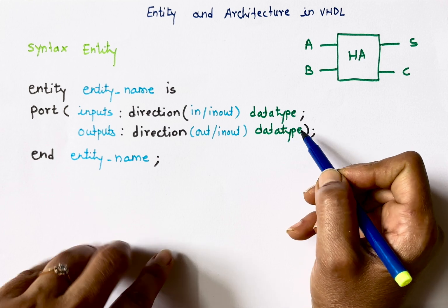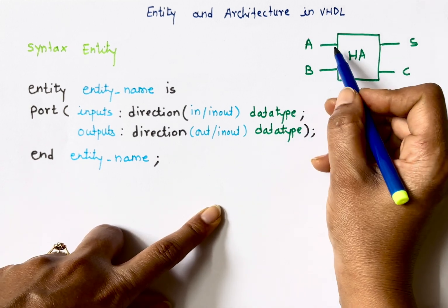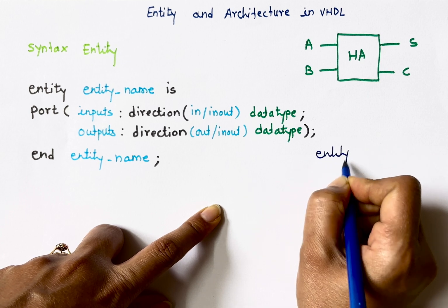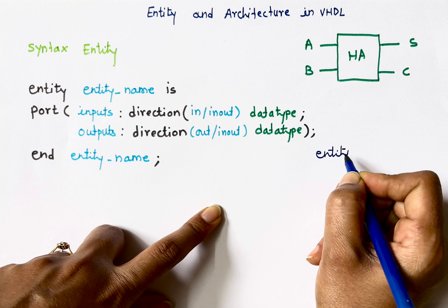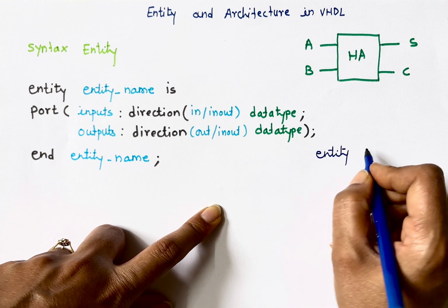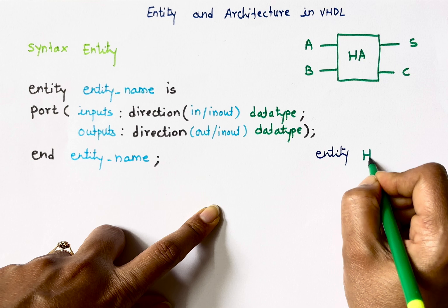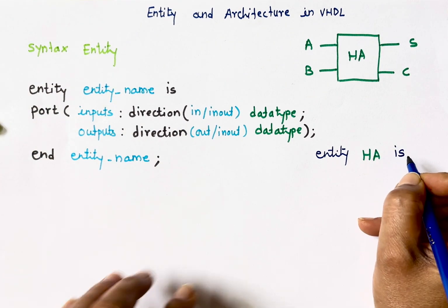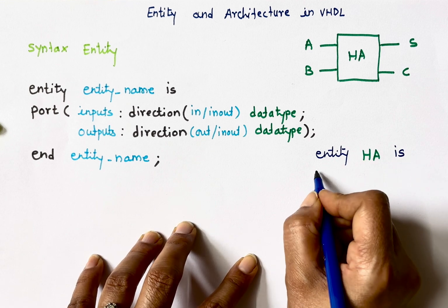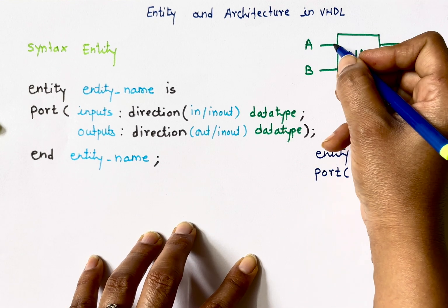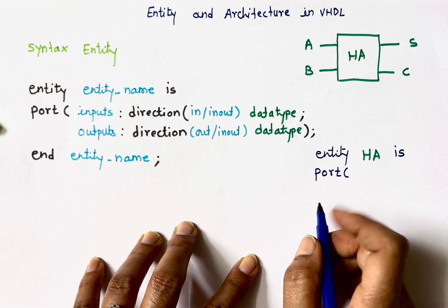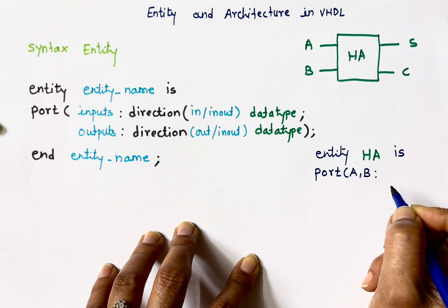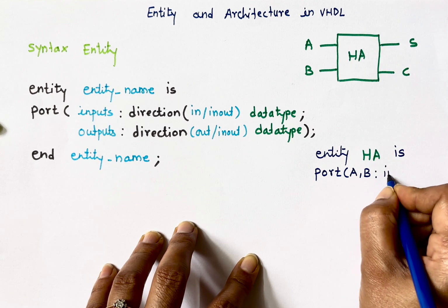Let's write an entity for the half adder circuit. 'entity' is the first word, entity name I'll write as 'ha'. Next is 'port'. I have two input ports A and B, both are one-bit ports, so I'll write them on the same line: 'a, b : in'.